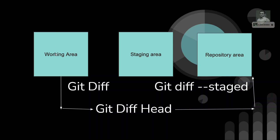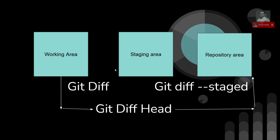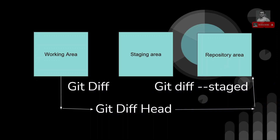If you want to check the changes between the working area and the staging area, you simply type `git diff`. This command will match and show the difference between the files in the working area and the staging area.